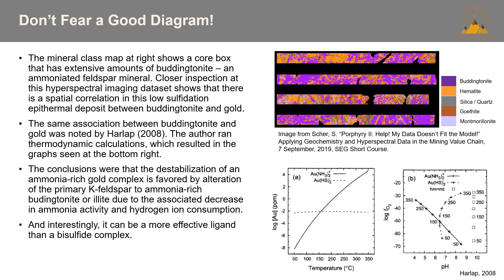Here we'll look at real-world geochemical and mineralogical data with some theoretical diagrams built on simple thermodynamic calculations. The mineral plasma image at right shows a core box with extensive amounts of buddingtonite — visible in purple — which is an ammoniated feldspar mineral. In this hyperspectral imaging dataset, we can see a spatial correlation in this low-sulfidation epithermal deposit between buddingtonite and gold, also noted by Harl (2008). Thermodynamic calculations showed that destabilization of an ammonia-rich gold complex is favored by alteration of primary K-feldspar to ammonia-rich buddingtonite or illite, due to the associated decrease in ammonia activity and hydrogen ion concentration. Interestingly, ammonia can be a more effective ligand than a bisulfide complex.